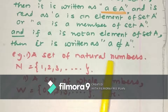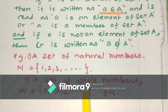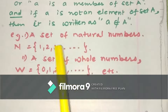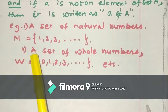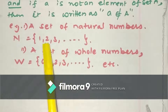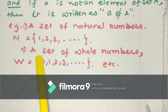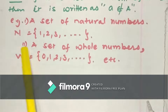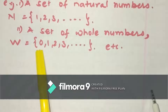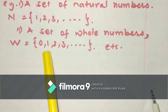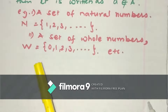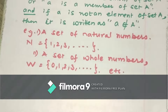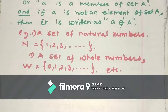Here we have seen examples of sets. The set of natural numbers is the collection of natural numbers — we denote it by capital N, and the elements are the counting numbers from 1 to infinity. Similarly, we have the set of whole numbers, denoted by capital W, whose elements are the natural numbers along with 0. Similarly, we have the set of integers, the set of rational numbers, and so on.